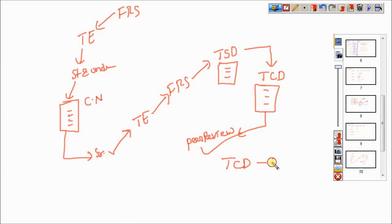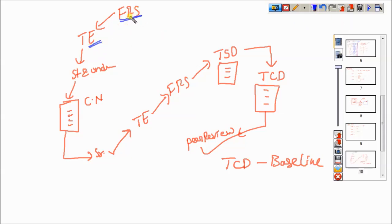Whenever peer review is conducted and the test cases are baselined — what is the meaning of baseline? Baseline means finalizing the document. Finalizing the test case document is called baseline. So to recap the process: the test engineer receives the FRS document, which has all the client requirements. They study and understand it to check whether the application is working in the same manner. Any doubts raised are mentioned in the clarification documentation.